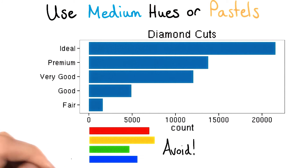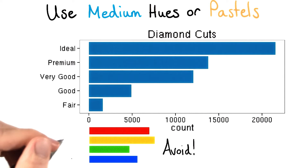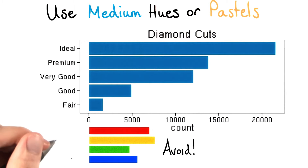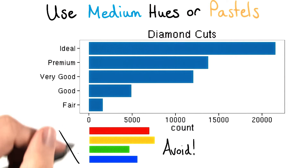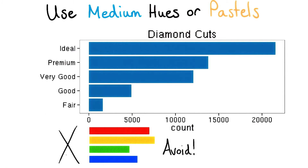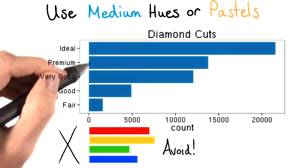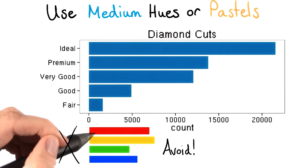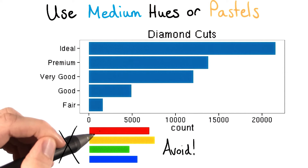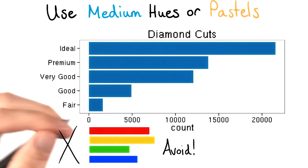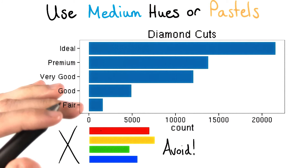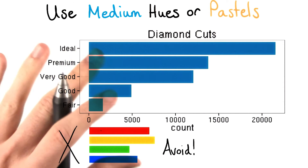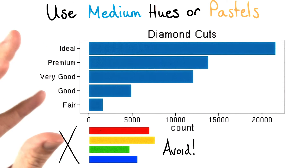Rainbow colors, primary colors, and other bright, bold colors can create noisy visualizations which strain the eye. Even if all these bars were a bright red color, I probably wouldn't want to stare at it too long. As you encounter graphics, you should look for this to determine how it is affecting you as a viewer.